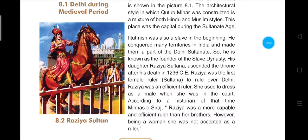Iltutmish conquered many territories and expanded the Delhi Sultanate, making him the real founder of the slave dynasty. His daughter Rajya Sultana ascended the throne after his death, since his sons were not capable of being king. Rajya Sultana was the first female ruler to rule over Delhi and the first Sultana.